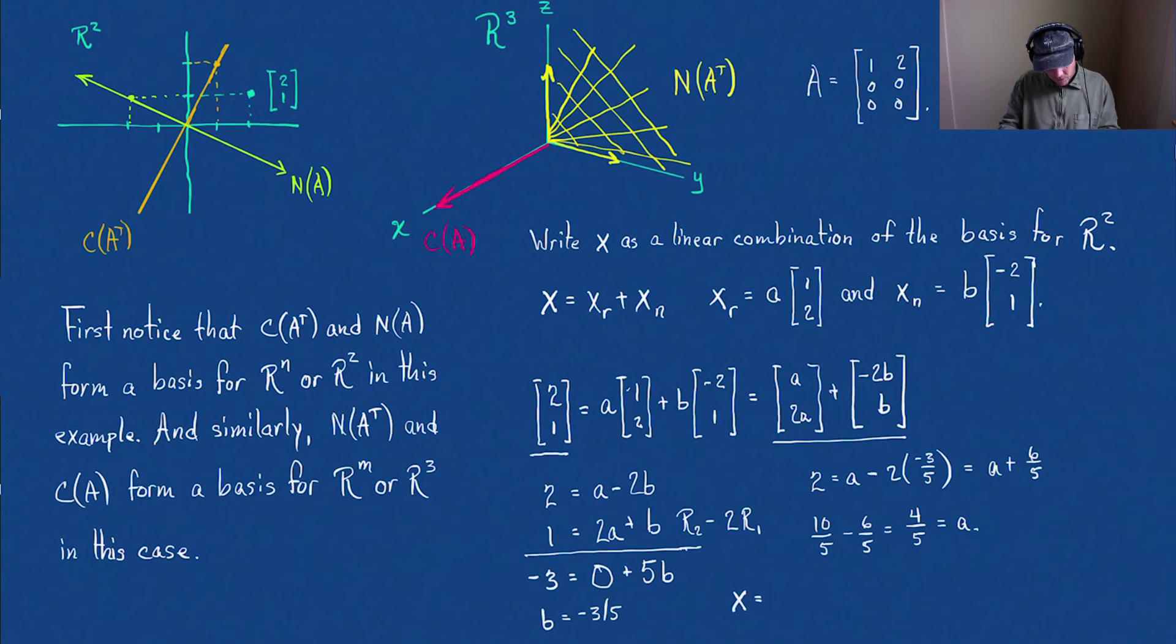So our vector X is a linear combination of the vector. Let's see. A is 4 fifths. So that's going to be 4 fifths. And then 2 times 4 fifths, that's 8 fifths. That's the vector in the row space.